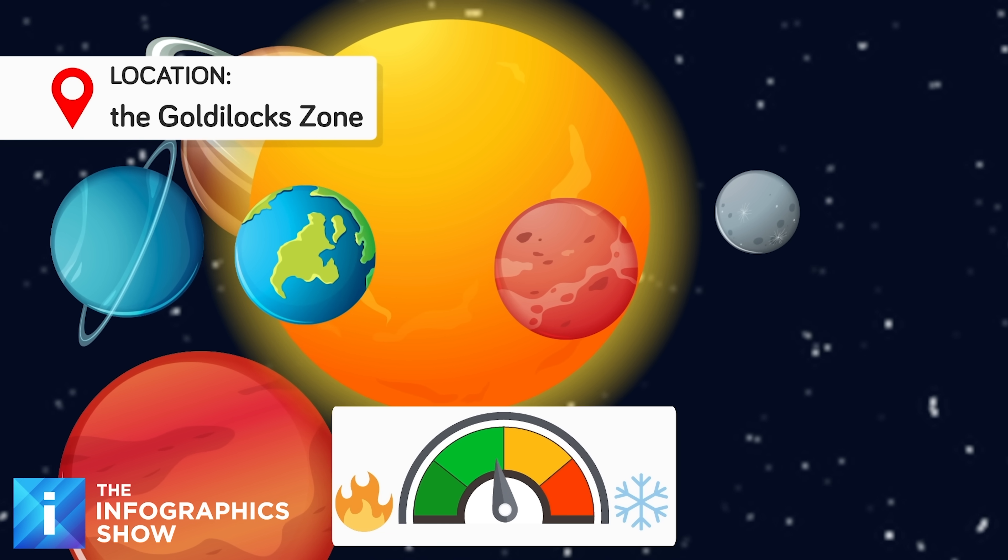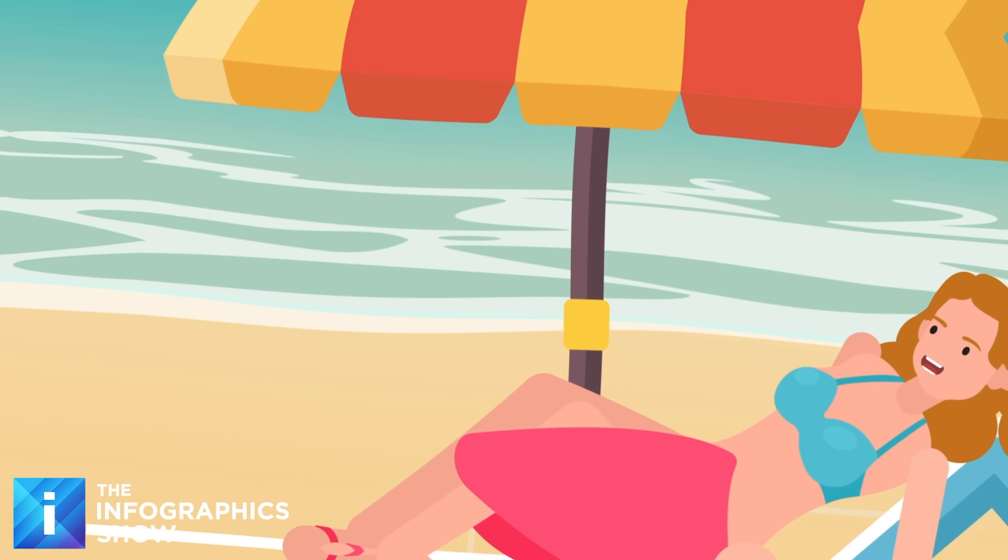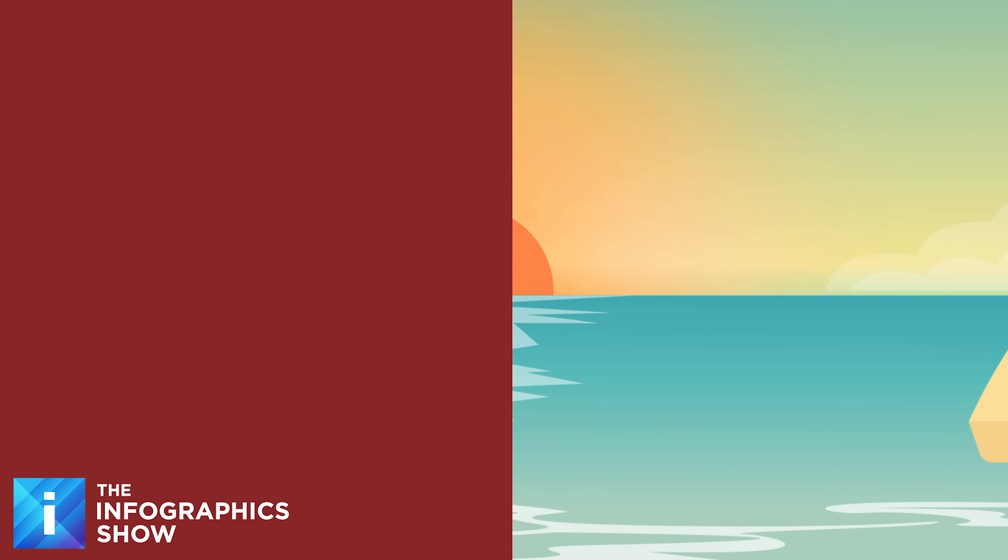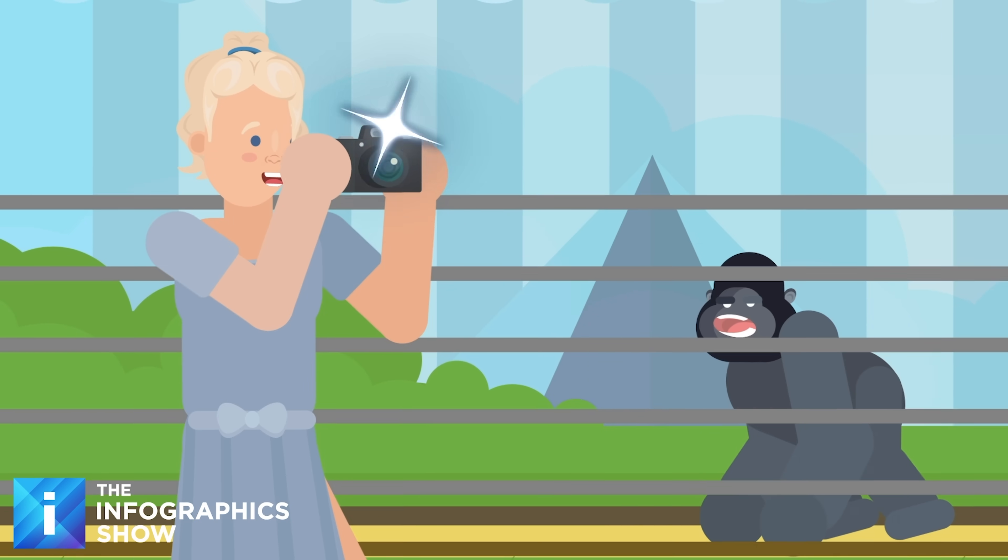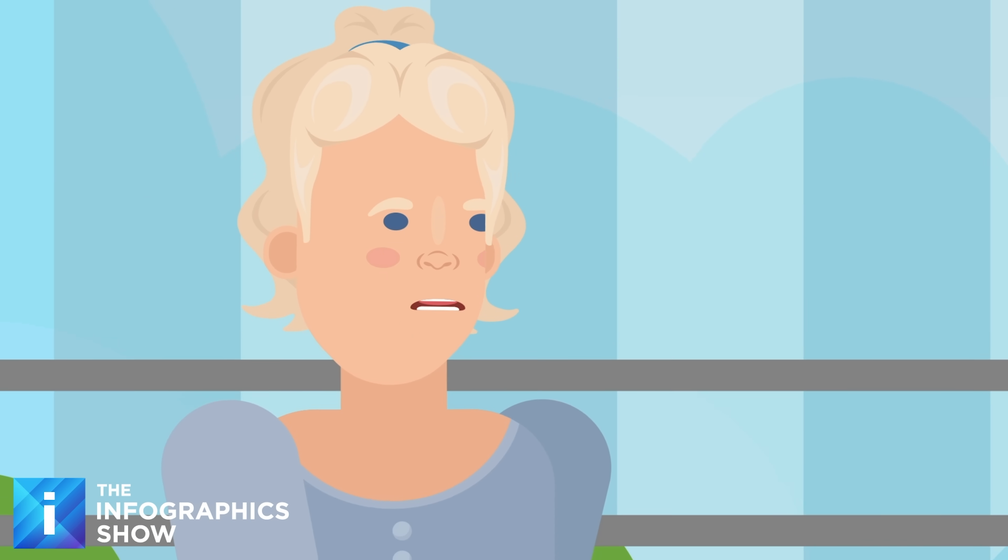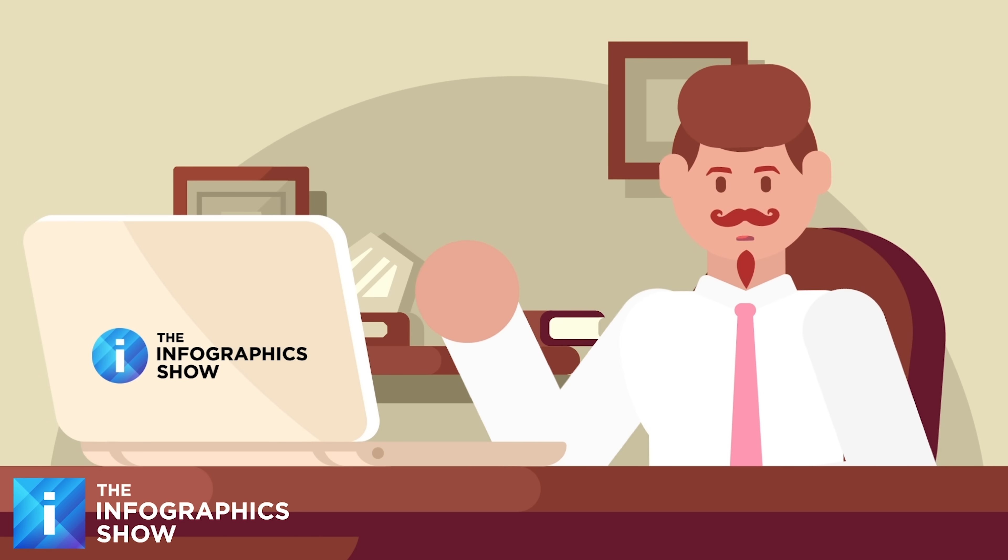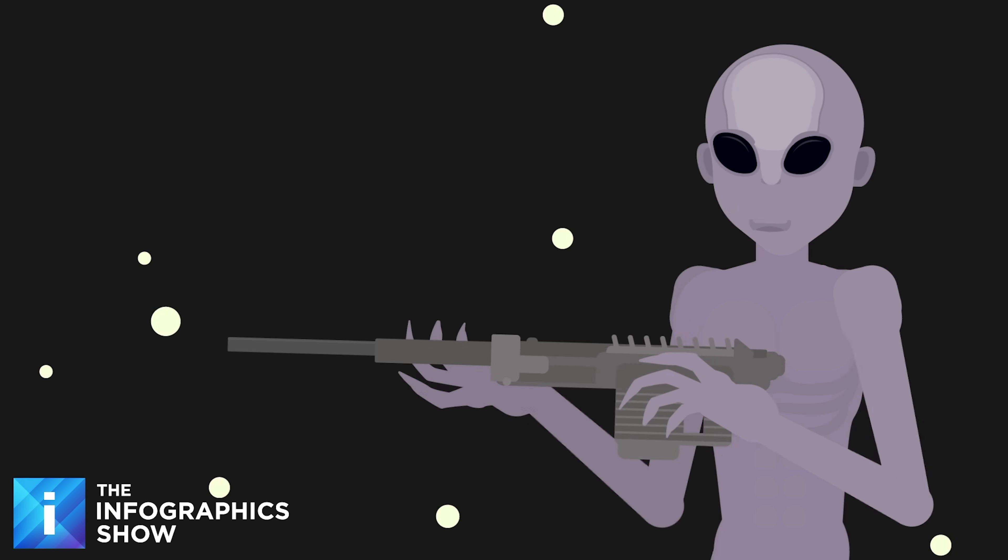Earth sits in what scientists call the Goldilocks Zone- not too hot, not too cold, but just right to support life. Yet, it's not just the distance from the sun that makes life here possible. Earth's ability to nurture over 8 million species comes from a long chain of rare events and cosmic coincidences that have not been replicated anywhere else that we know of. Hollywood might have spoiled us when it comes to what we expect from life in outer space.